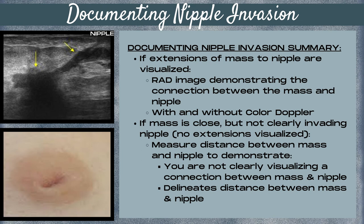If the mass is close to the nipple but not clearly invading it — meaning you don't see any visible extensions — then you want to measure the distance between the mass and the nipple. This demonstrates that you're not clearly visualizing a connection and delineates that distance. Some sites will want a measurement of the distance from the nipple regardless of whether extensions are seen, so it's important to follow the protocol of your site.